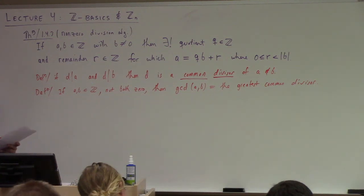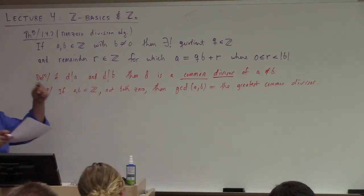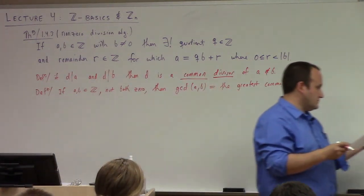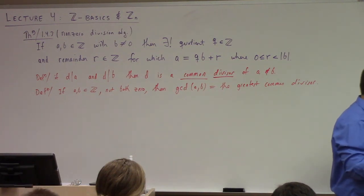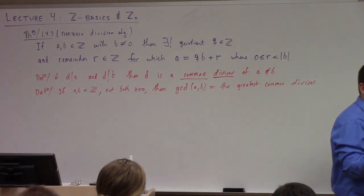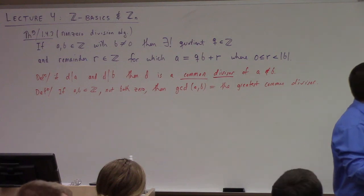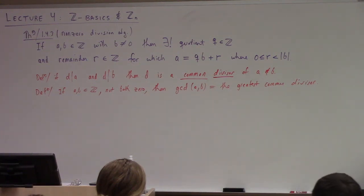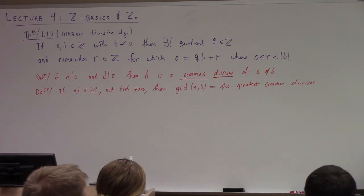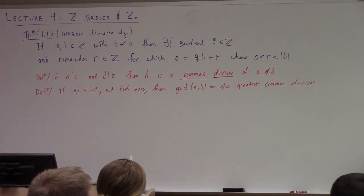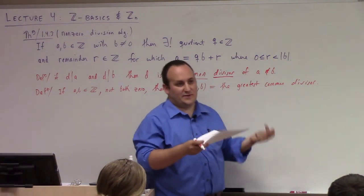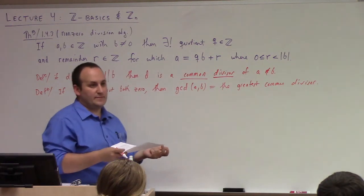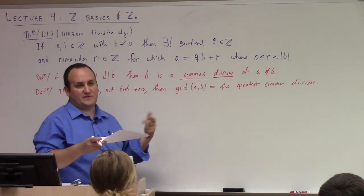This is well-defined because part four of that proposition shows us that the divisor can't have a magnitude larger than the magnitude of the thing it divides. That's common sense: if a equals b times c, the magnitude of b can't be larger than the magnitude of a, because c is an integer, so it's at least one.